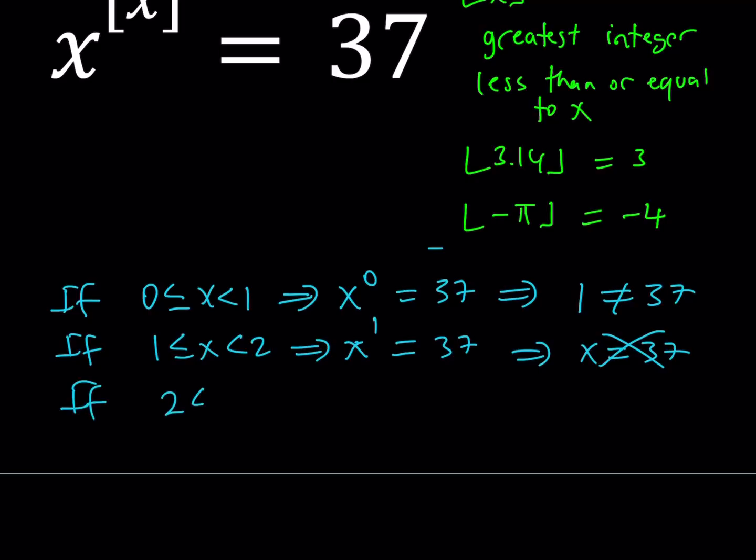What if x is between 2 and 3? Then we get x to the second power equals 37, and from here we get two values, but I'm just going to consider the positive value. Don't be mad at me if I don't talk about the negatives here because they're not needed. We get x equals square root of 37. Obviously, this number is not between 2 and 3 either because square root of 37 is greater than 6 and less than 7, so it's going to be between 6 and 7. That doesn't work either.